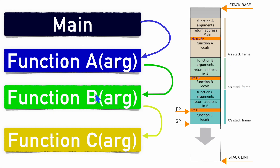Similarly, when function B is called from function A, the arguments of function B are stored, followed by the return address of function A — the frame pointer to return to after function B completes. Then the local variables of function B are stored in function B's stack frame.